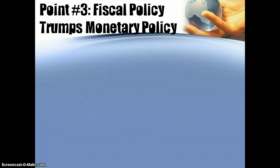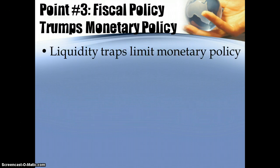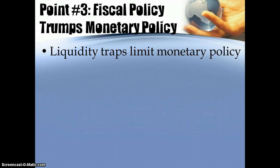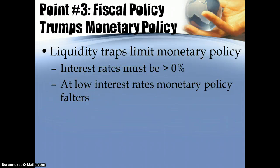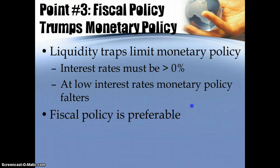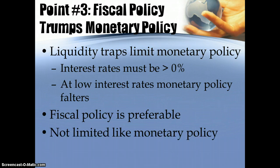The third thing Keynes said is that fiscal policy is better than monetary policy. He doesn't deny that monetary policy works, but it's just not as useful as fiscal policy. He warns against what are known as liquidity traps, which limit the power of monetary policy. If you continually increase money supply, you drive interest rates further toward 0%. But once you get to 0%, there's nothing else you can do. Whereas with fiscal policy, you don't have that problem — you just keep spending and continue to boost aggregate demand for as far as you're willing to spend.